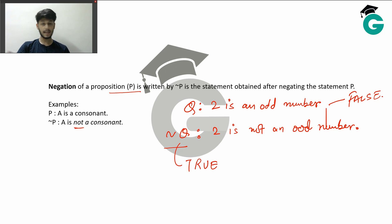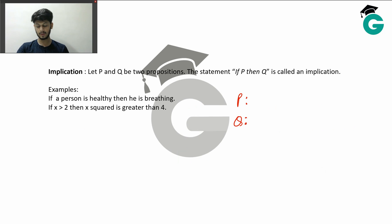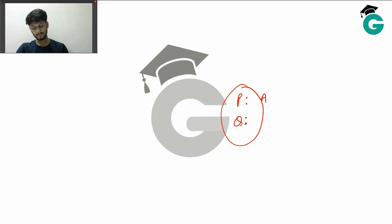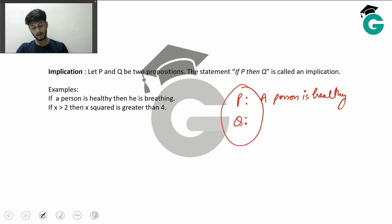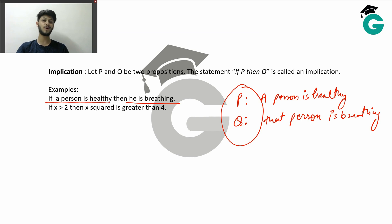Now let's define what an implication is. Suppose you have two propositions P and Q. We say 'if P then Q' is an implication. Suppose P is 'a person is healthy' and Q is 'that person is breathing.' Then the implication is: if a person is healthy, then he is breathing — and this is true. There is no way he is not breathing and yet healthy.